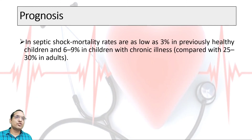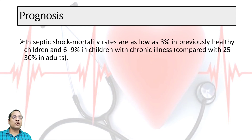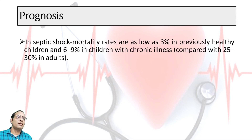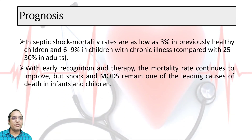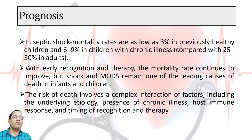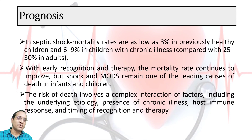The prognosis of shock depends on the child's age and etiology. In septic shock, mortality is as low as 3% in healthy children and may increase to 6–9% in children with chronic illness, compared to 25–30% in adults. With early recognition and therapy, mortality rates continue to improve, but shock remains one of the leading causes of death in infants and children. Risk of death involves a complex interaction of factors including underlying etiology, presence of chronic illness, host immune response, and timing of recognition and therapy.